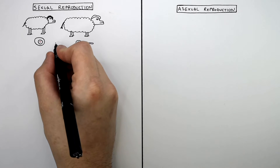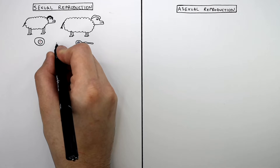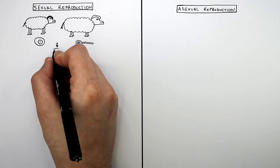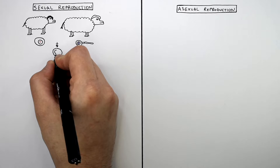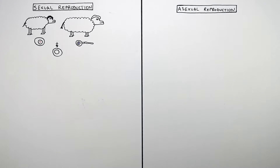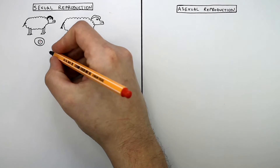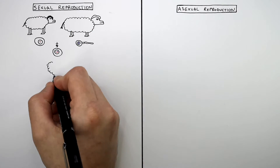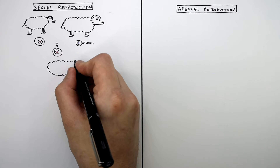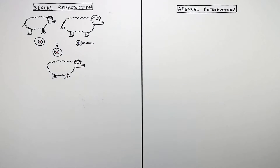So during sexual reproduction, these two sheep are going to have sex, and the gametes are going to fuse together. The egg cell and the sperm cell will fuse to form a zygote — a diploid zygote with two sets of chromosomes, one from each parent. So the offspring formed is not going to be genetically identical to its parents, because the offspring show variation — a difference in characteristics.